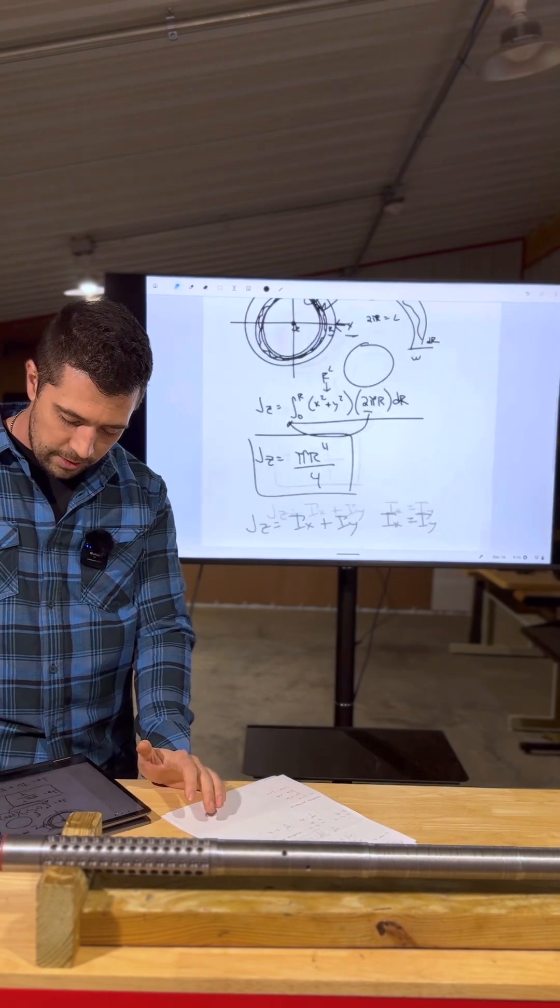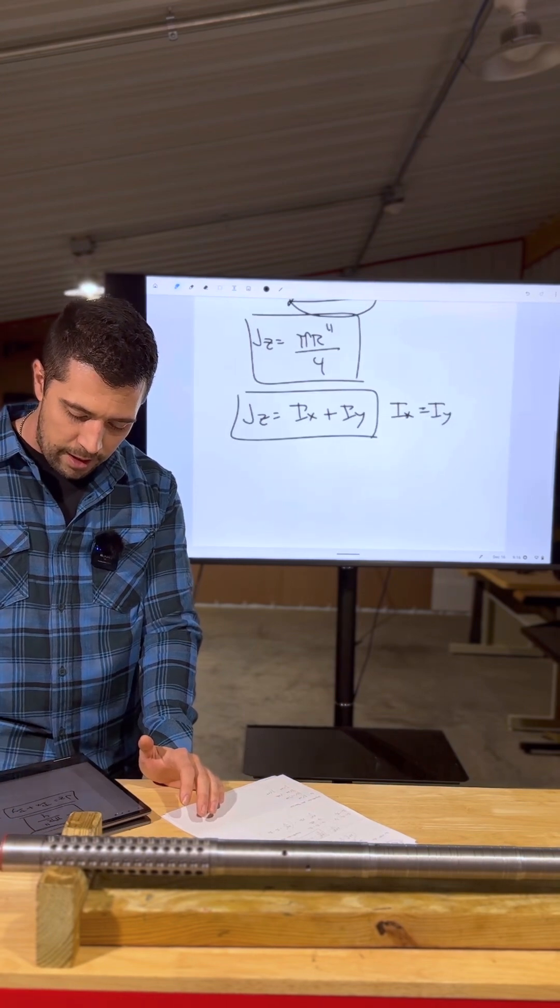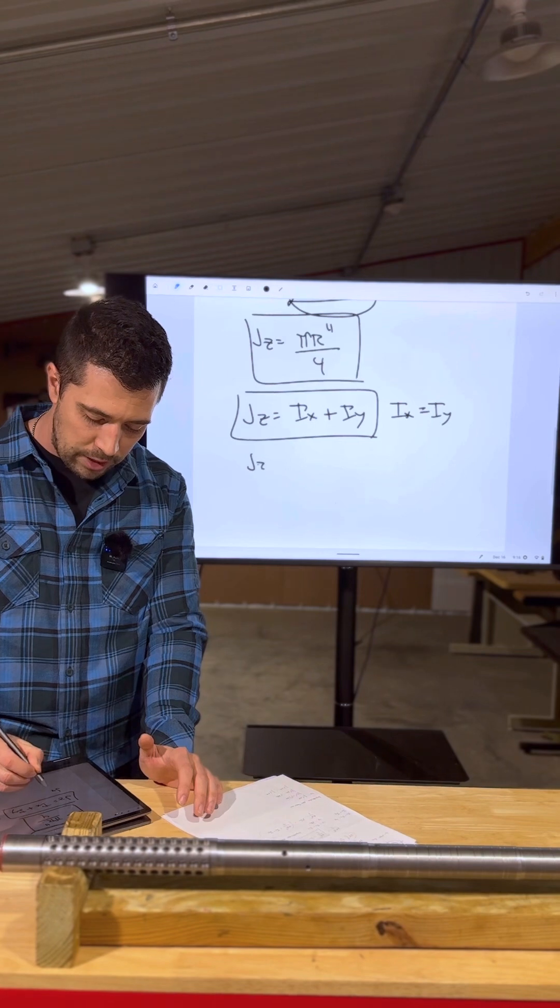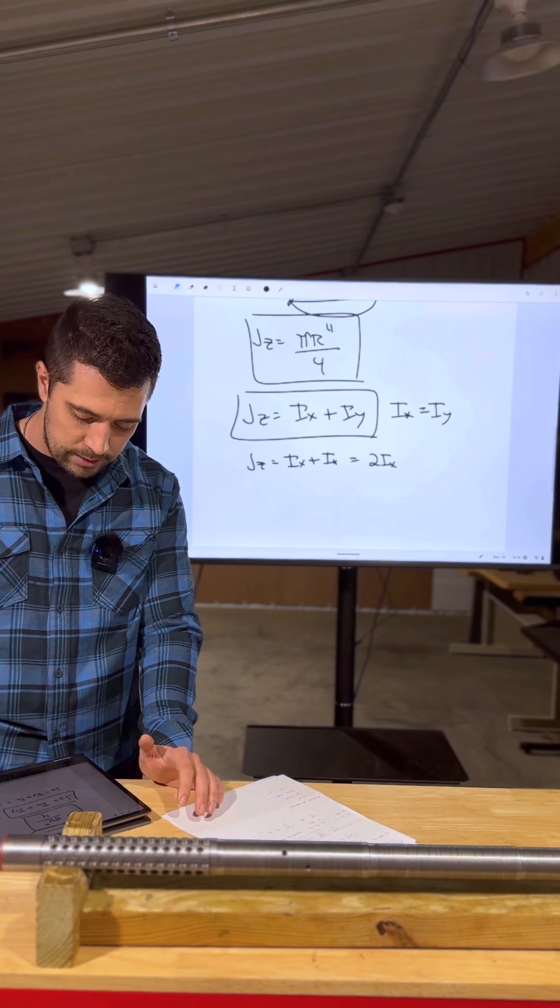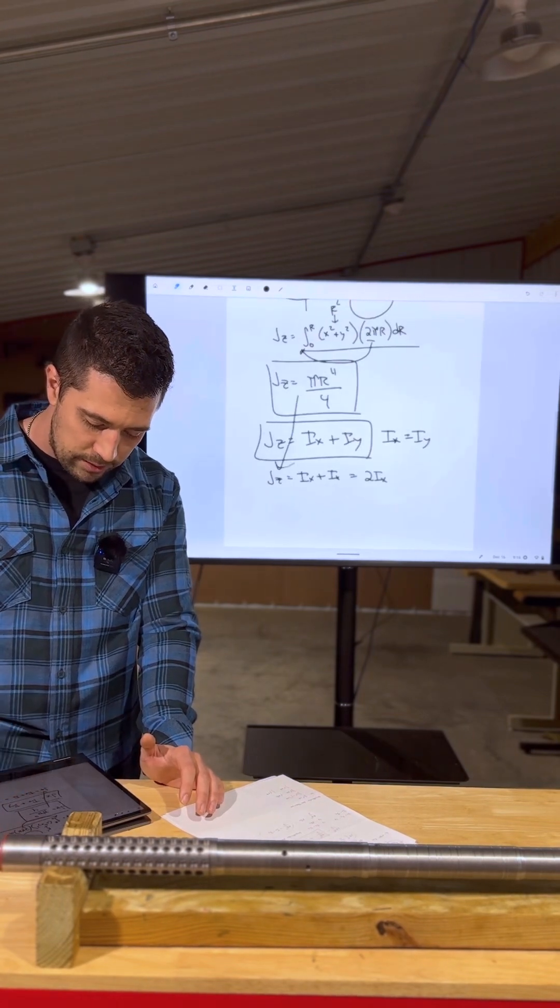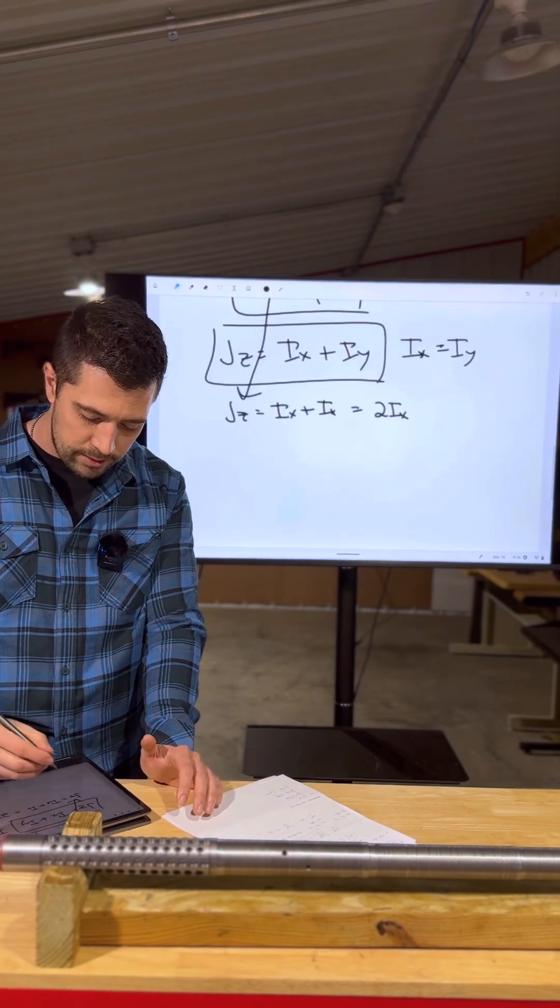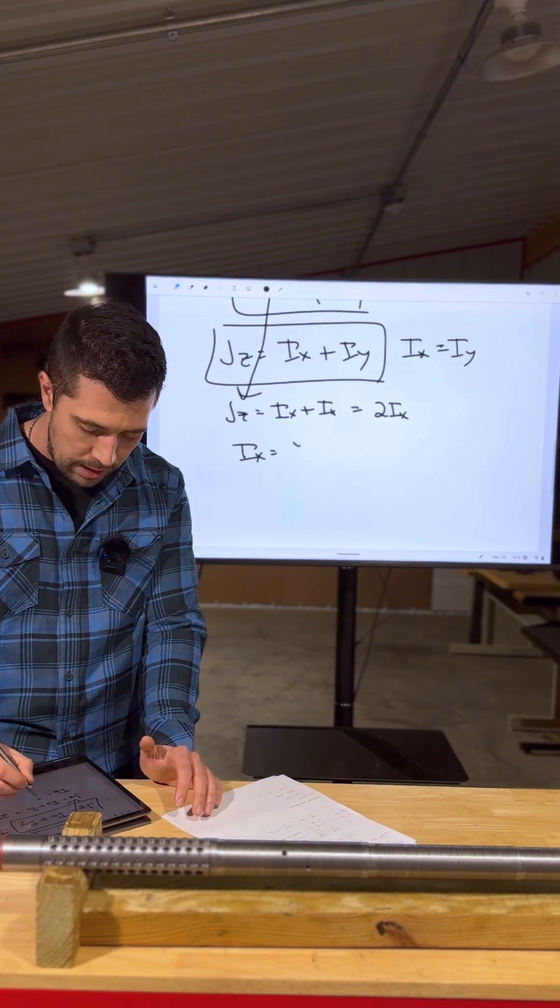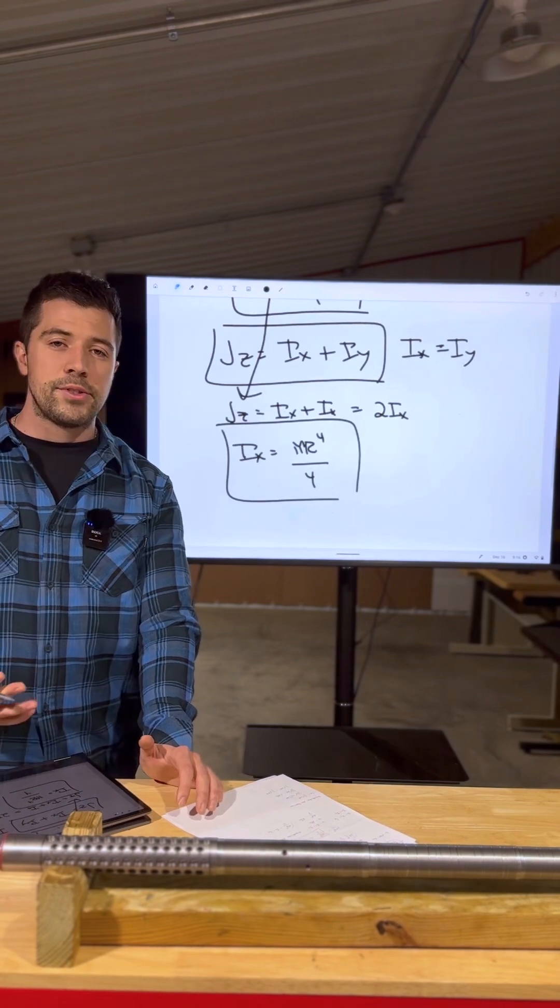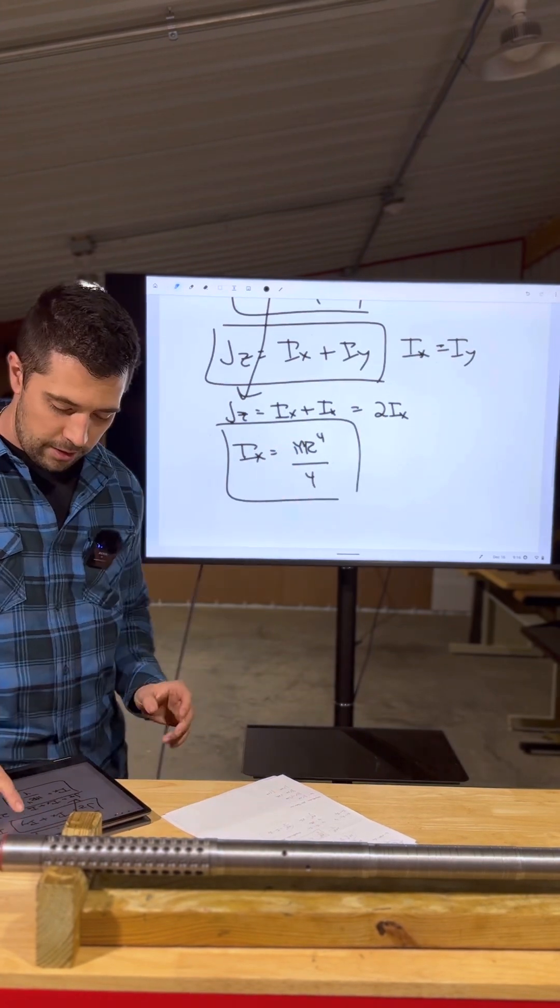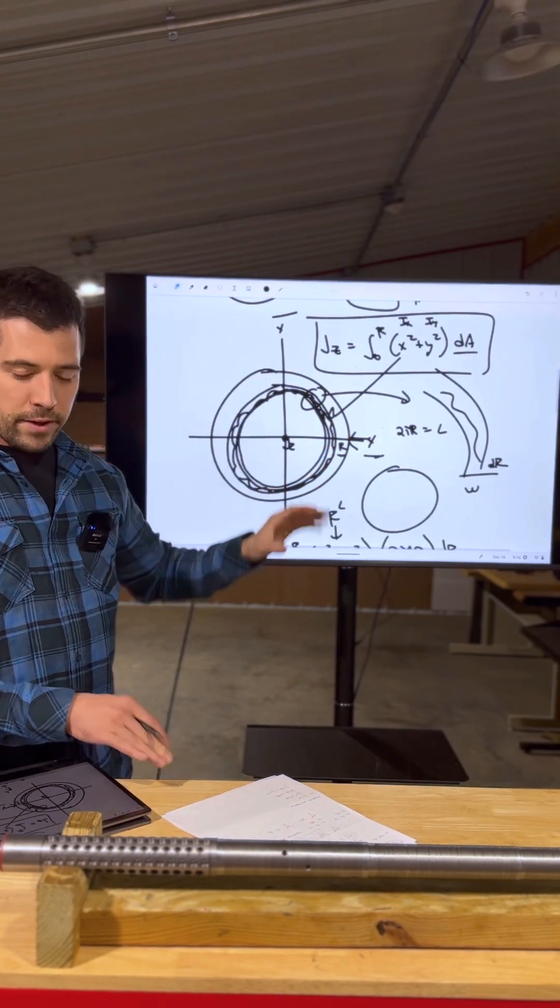So this is called the perpendicular axis theorem. And if IX equals IY, we have JZ equals IX plus IX, which equals 2IX. And if we plug JZ for πR to the fourth over 4 and simplify this, we get IX equals πR to the fourth over 8. And there we have the amount of resistance of our object about X, which is equal to Y as an individual component.